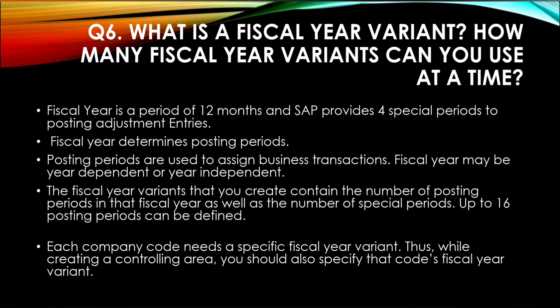The next question is: what is a fiscal year variant and how many fiscal year variants can you use at a time? A fiscal year variant is a period of 12 months, and SAP provides four special periods for posting adjustment entries. Fiscal year determines posting periods, which are used to assign business transactions. The fiscal year variant you create contains the number of posting periods in that fiscal year as well as the number of special periods. Up to 16 posting periods can be defined, and each company code needs a specific fiscal year variant.